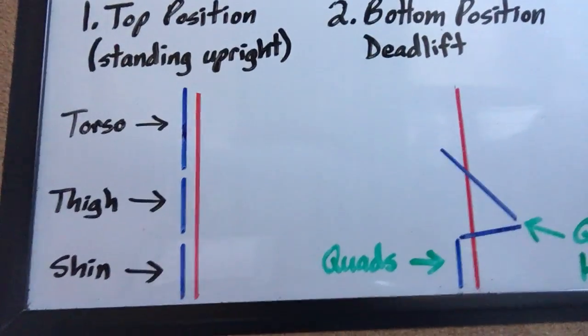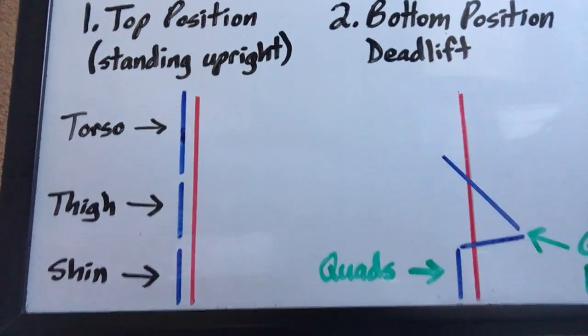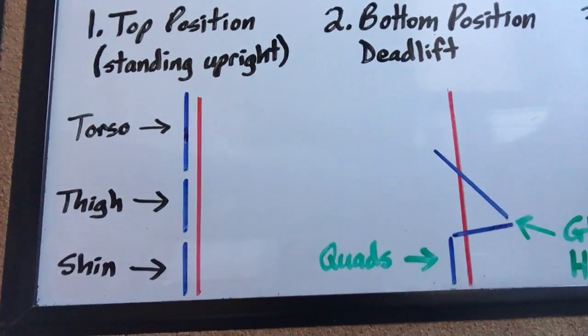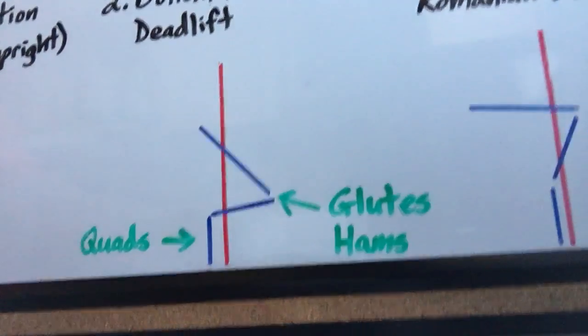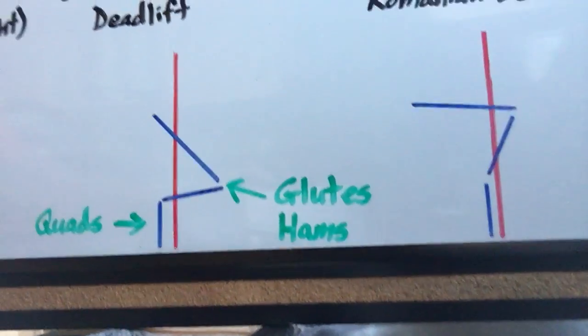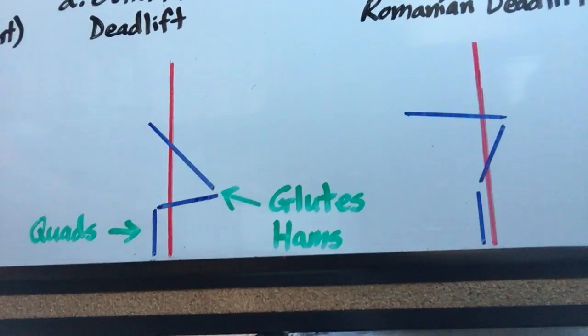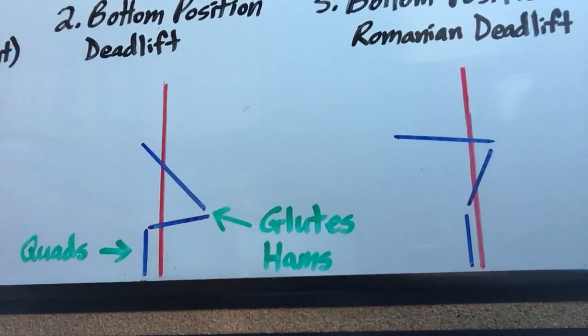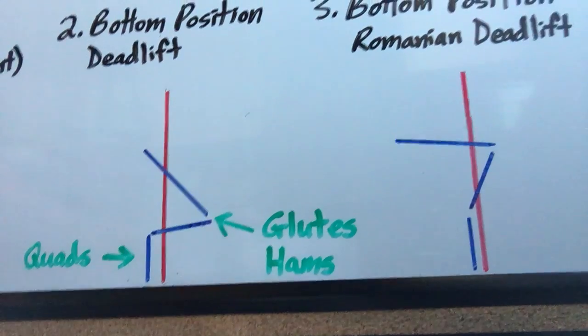Now, in the top position of the deadlift, since the hamstring crosses the hip joint and the knee joint, it's in a relatively mid range in this position. As you descend into a deadlift, you're bending at the hip and at the knee. Now, depending on the bend in the knee and the hip, the hamstrings are pretty much in an unchanged length position. Therefore, their capacity to produce force is still very, very great in this position.